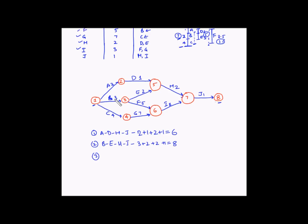The third path takes B to F instead of E. Path B-F-I-J has durations 3 plus 5 plus 3 plus 1, which equals 12 days.